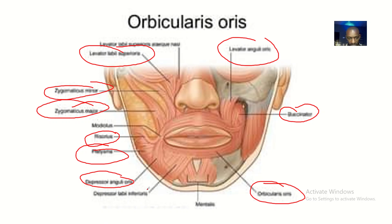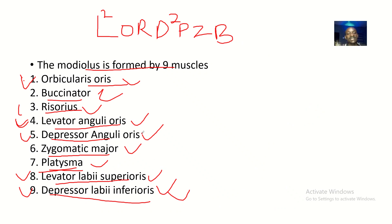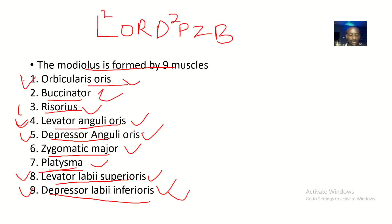So that's it. The mnemonic to remember the muscles that make up the modulus is LORD PZB, with L raised to the power of 2 and D raised to the power of 2. If you write it down a few times it will already be in your head. See you in the next tutorial.